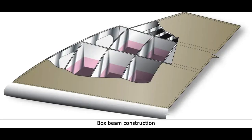The box beam type of wing construction uses two main longitudinal members with connecting bulkheads to furnish additional strength and to give contour to the wing. A corrugated sheet may be placed between the bulkheads and the smooth outer skin so that the wing can better carry tension and compression loads. In some cases, heavy longitudinal stiffeners are substituted, and a combination of corrugated sheets on the upper surface and stiffeners on the lower surface is sometimes used. Air transport category aircraft often utilize box beam wing construction.